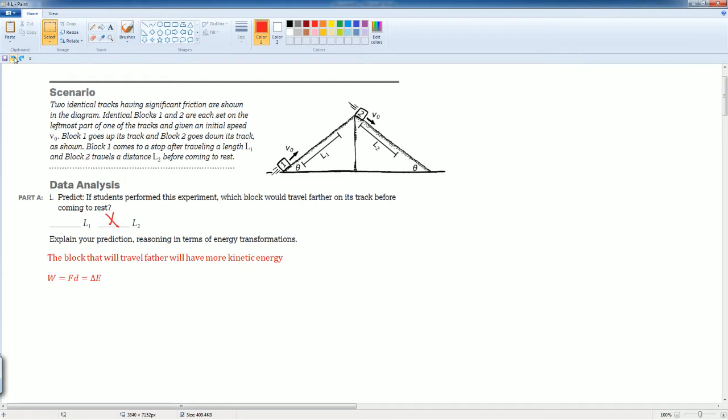Here's my reason why: the block will travel further will have more kinetic energy. And I know that work is equal to force times distance, which is also equal to the change in kinetic energy. So I can just set my F D equals to 1 half mv squared minus mgh. Here I assume that all the initials, the initial kinetic energy and the initial potential energy, were zero in both cases.